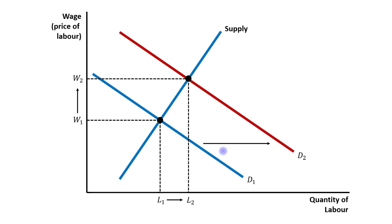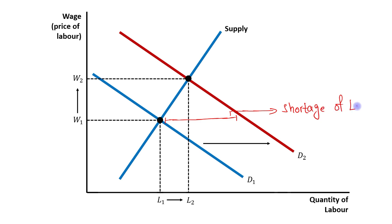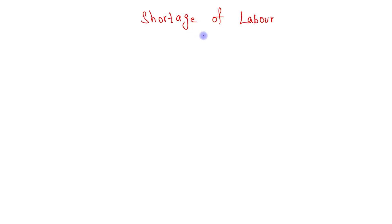When there was a rightward shift in the demand curve for labor, at the initial wage rate it creates a situation of shortage of labor. In this situation, the price of labor — which is the wage rate — will be increased.